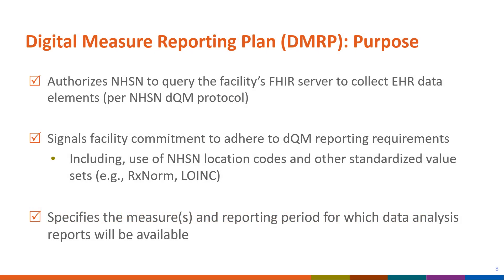The Digital Measure Reporting Plan, or DMRP, plays an important role in the collection and analysis of data for NHSN DQMs. Similar to existing monthly reporting plans, a facility will complete a DMRP as a step in the process to begin reporting data for NHSN's digital quality measures. The DMRP provides authorization for NHSN to query the facility's FHIR server to collect specified data elements per the NHSN protocol, signals facility commitment to adhere to DQM reporting requirements including the use of NHSN location codes and other standardized value sets, and specifies the measure or measures and reporting periods for which data analysis reports will be available in the NHSN application.